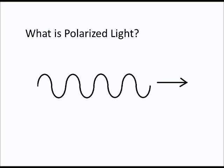Basically put, polarized light is light that vibrates in only one direction. If you look at the diagram here, it's representing a light wave that is vibrating and moving to the right. It's a transverse wave, and in this case it appears to be vibrating vertically — in other words, up and down. But light waves don't just vibrate vertically.